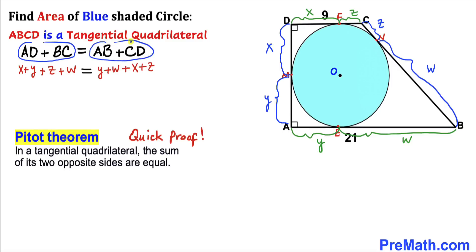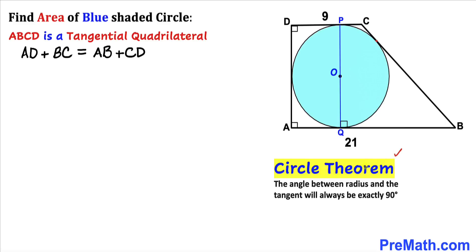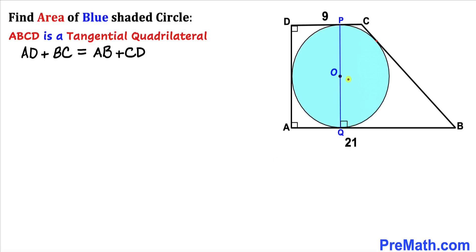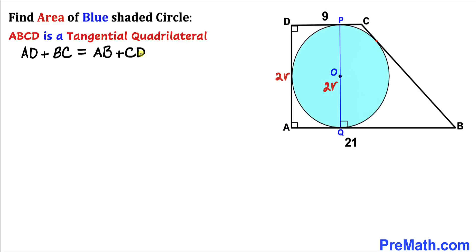Now let's focus on diameter PQ. By the circle theorem, the angle between a radius and a tangent is always 90 degrees. Since AB is tangent to the blue circle, this angle is 90 degrees. Assuming the radius of the blue circle is r, the diameter is 2r. We can see that side length PQ equals side length AD, so AD = 2r.